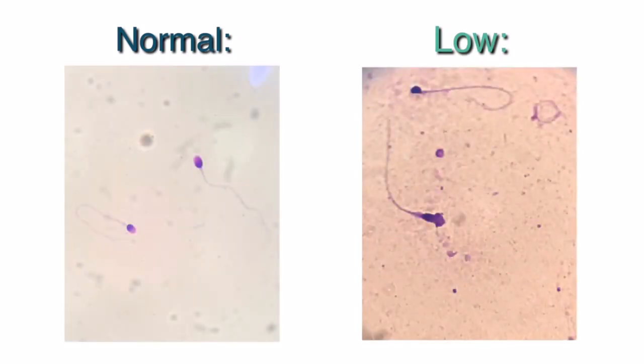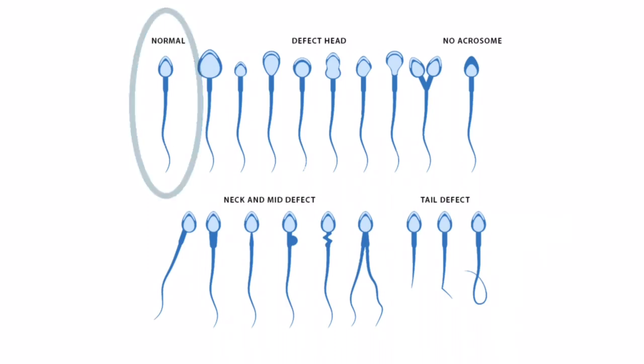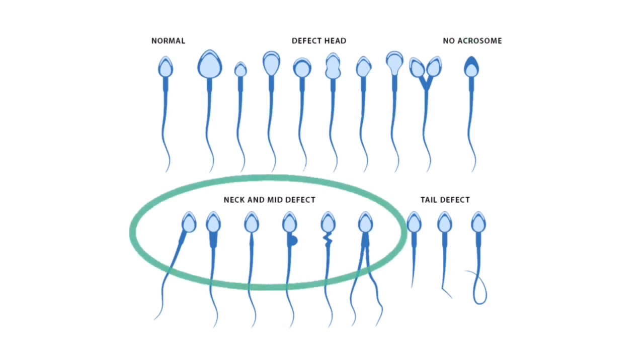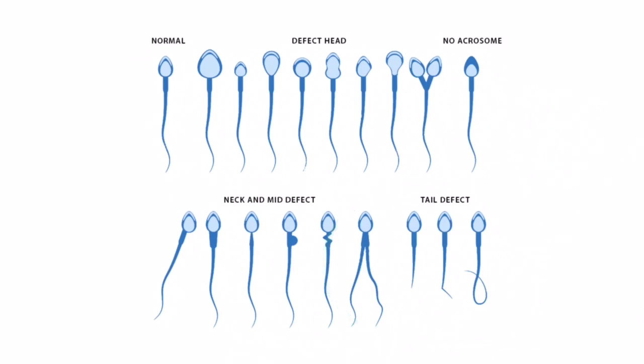Lastly, here is a comparison of normal morphology and low morphology. Morphology refers to the shape of the sperm. The sperm is made up of three regions. A normal sperm has an oval head, a slender midsection, and a tail that moves in a wave-like motion. Abnormal shape of the sperm can be due to abnormalities in the head, the midsection, or the tail, such as coiled tails or duplicate tails. Sperm that have an abnormal shape may not have the ability to penetrate or fertilize the egg.